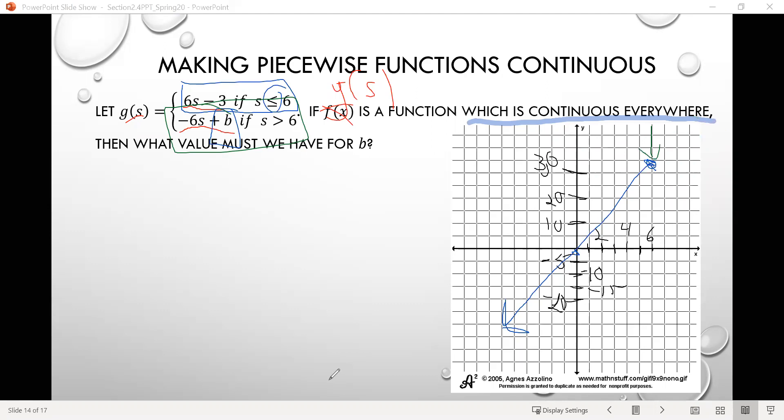So it must meet the other piece of the graph right here at this point, 6 comma 33, which tells us that if we look at the function negative 6s plus b, that if I input 6 for s, so if I do negative 6 times 6 plus b, the output there has to be 33. And so we can work that out. We'll have negative 36 plus b equals 33. If we add 36 to both sides, then we end up with 69, I think would be the value for b there.